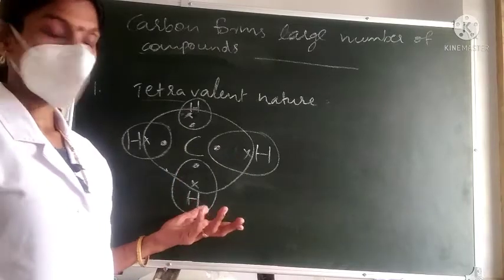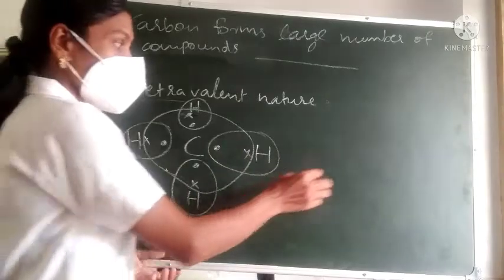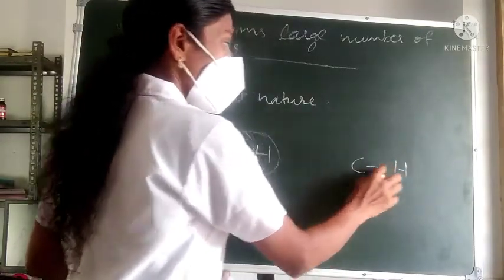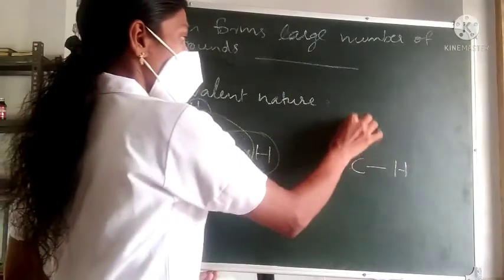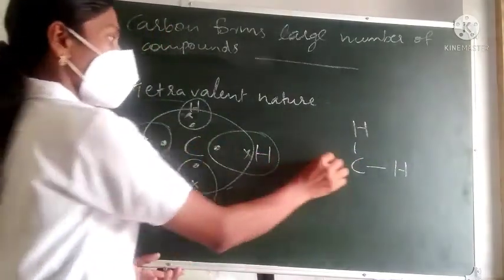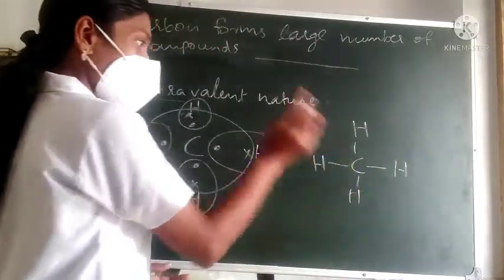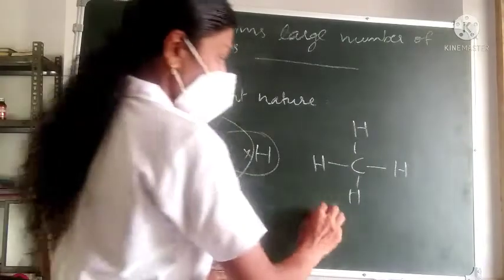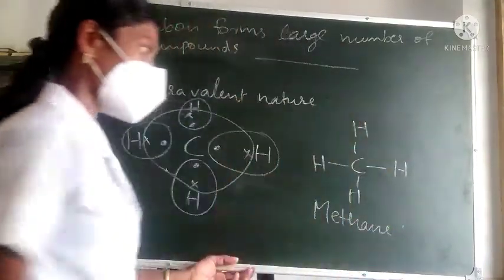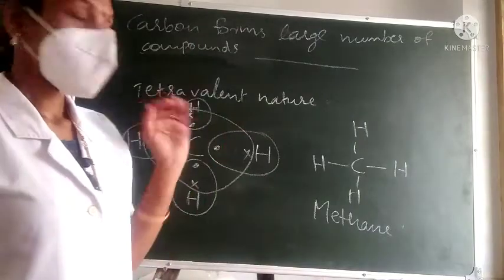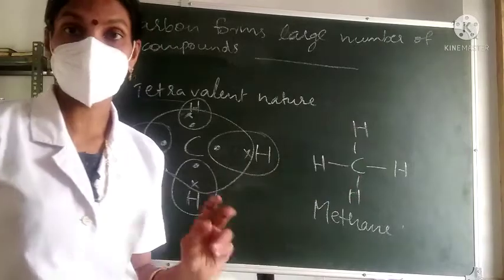Now, how can we draw the structure? The carbon atom and hydrogen atom share 1 pair of electrons, which we represent by a single line. This single line represents one single bond. So here 4 single bonds are formed. This is the structure of this compound, and the name of this compound, which we have already studied, is methane. In methane, carbon shares its 4 electrons with 4 hydrogen atoms.